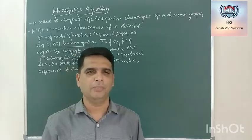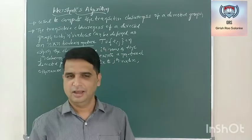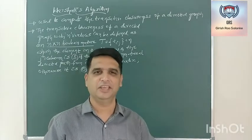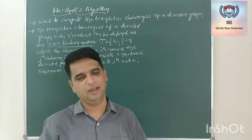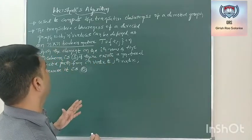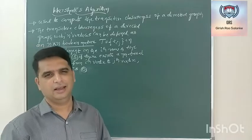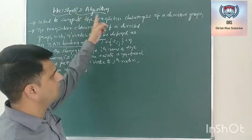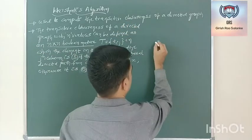Most of us know what the transitive property means. That means if A is a friend of B and B is a friend of C, then I can say that A is a friend of C. The same thing applies here also. To understand better what exactly this Varshal algorithm does, let me take a sample input. Note that the input to a Varshal algorithm is a directed graph.